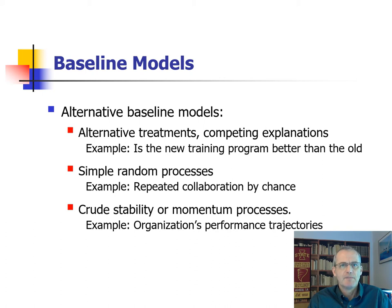Simple random processes can serve as meaningful benchmarks. I have in the past studied whether success increases the likelihood of project teams to work together again with the same partners in the future. When you are dealing with a limited pool of individuals, the probability of working again together with the same partner is not zero. But this probability can be calculated, and this calculated probability can provide a helpful benchmark for the meaningful interpretation of whether a factor like prior project success does increase the probability of working again together with the same partners beyond what we would expect by chance. Hence random processes can serve as important baseline models.